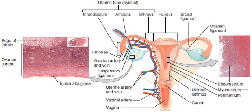The fertilized egg is carried to the uterus along the fallopian tube. It will have divided on its journey to form a blastocyst that will implant itself into the lining of the uterus, the endometrium, where it will receive nutrients and develop into the embryo proper and later fetus for the duration of the pregnancy.